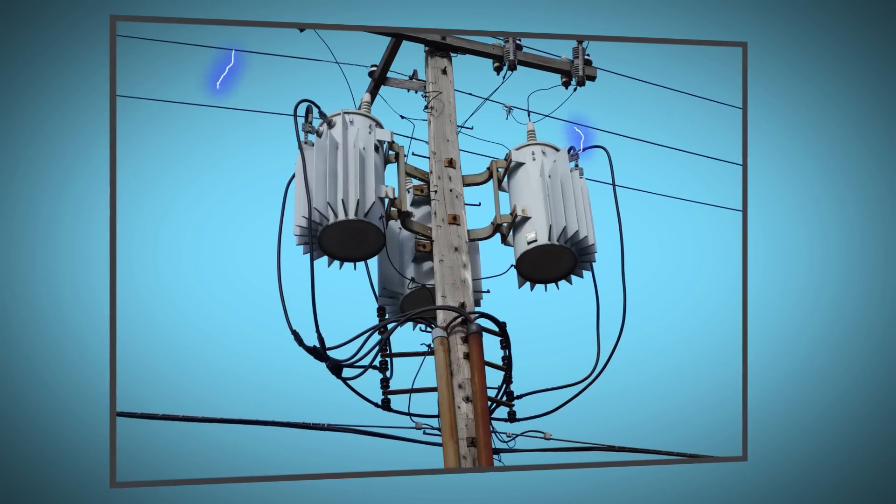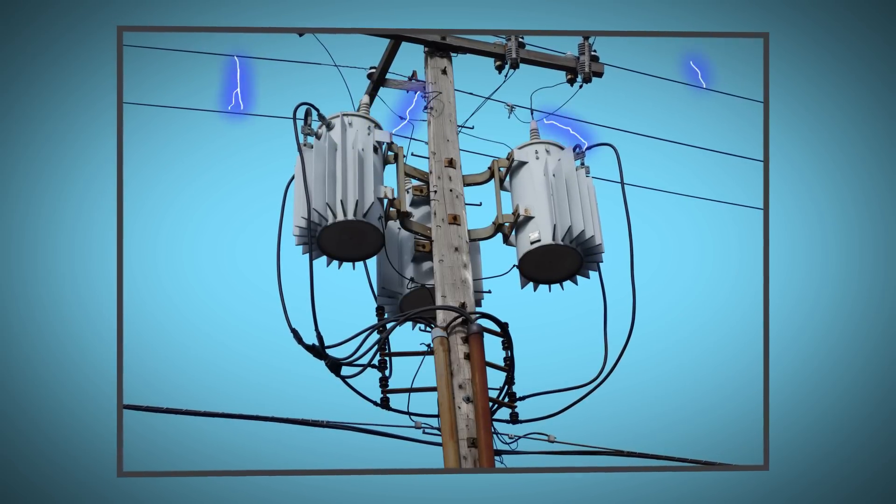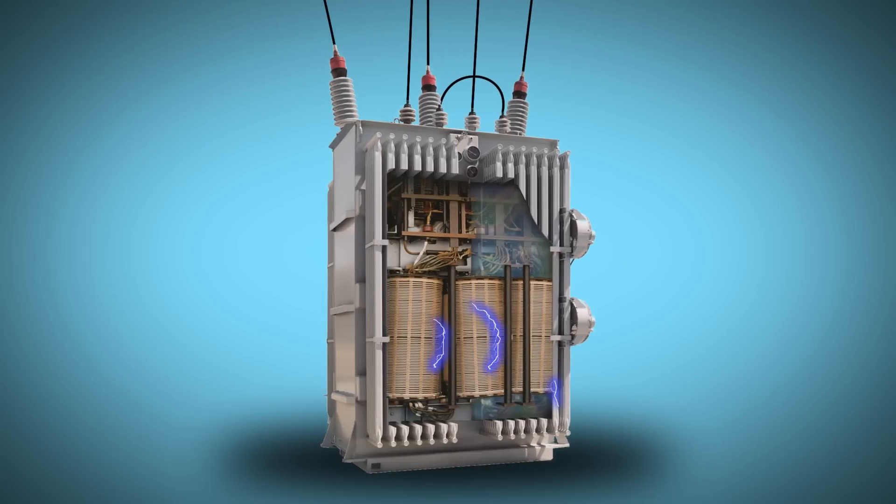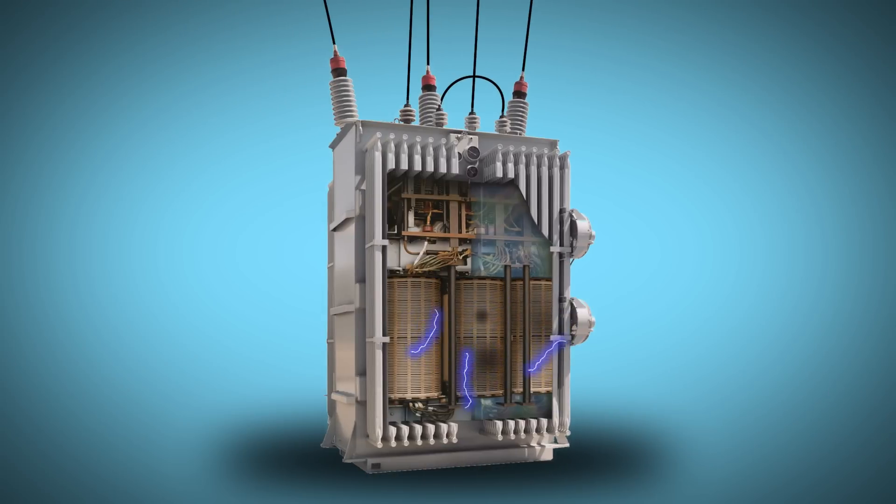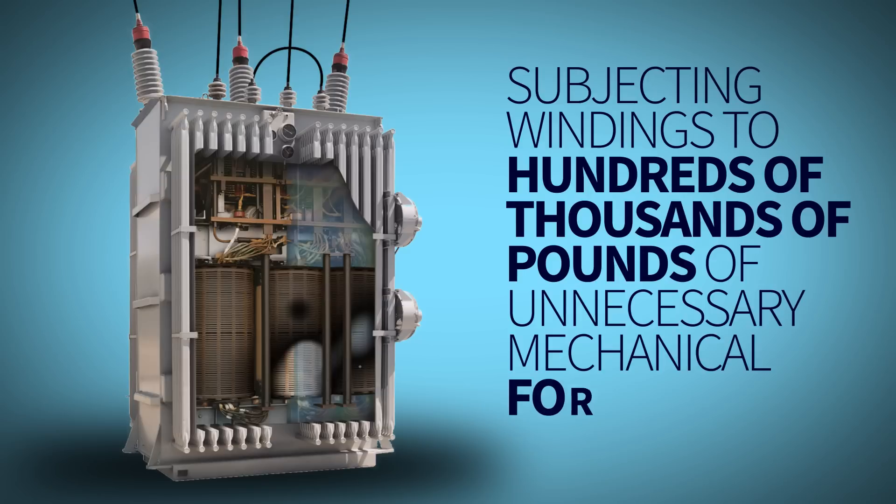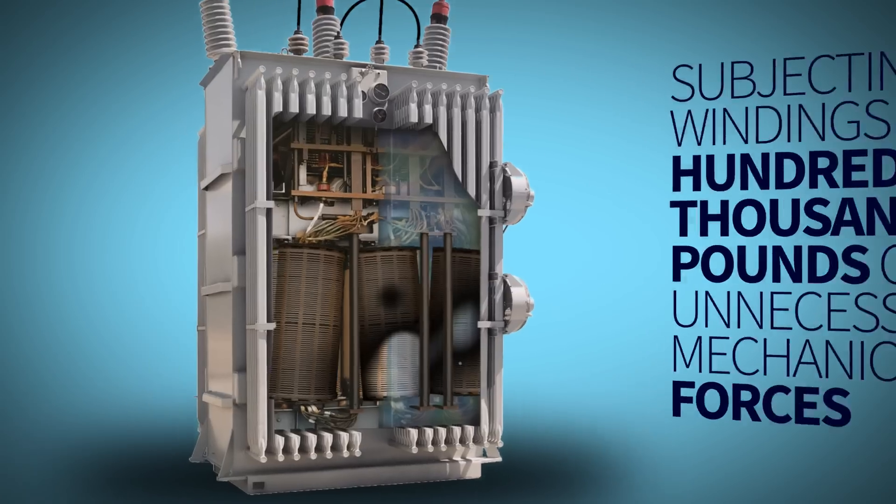This can cause immediate catastrophic damage to distribution equipment, such as splices or jumpers. And over time, it also wears out substation transformers, subjecting windings to hundreds of thousands of pounds of unnecessary mechanical forces that look like this.